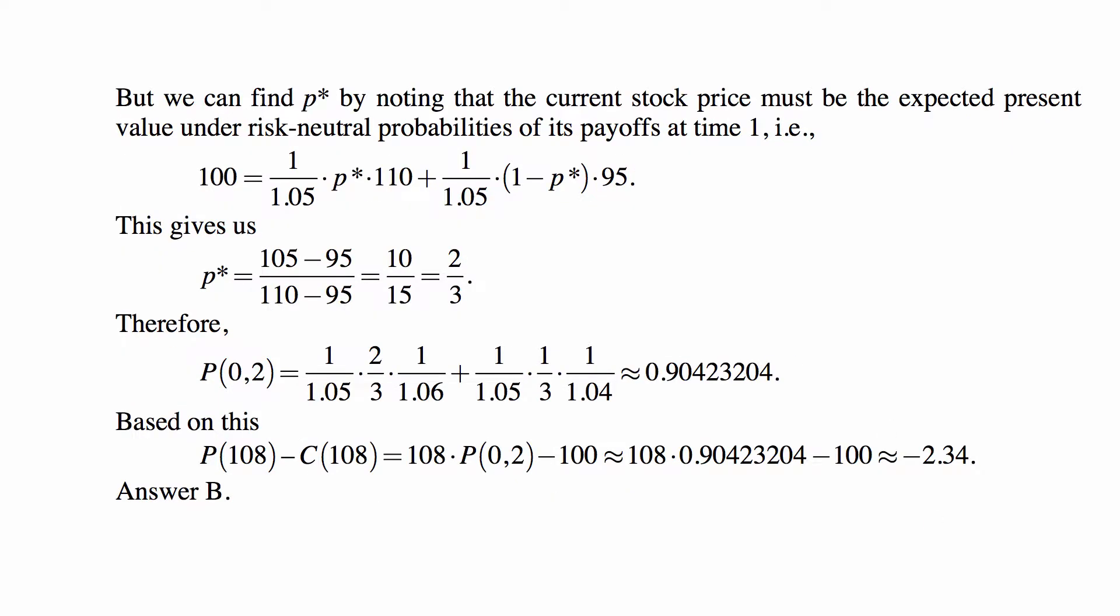But we can find p* by noting that the current stock price must be the expected present value under risk-neutral probabilities of its payoffs at time one. So it must be that 100 is equal to 110 in the up state, discounted at 5% times the probability of the up state p*,